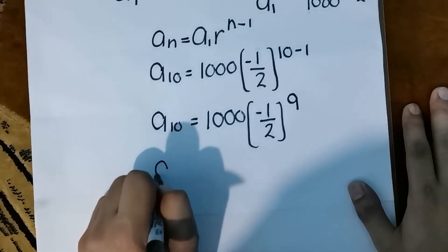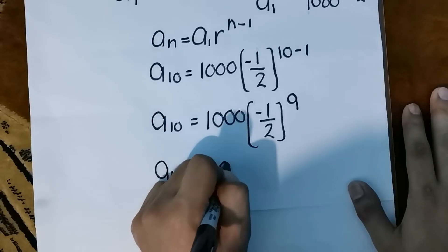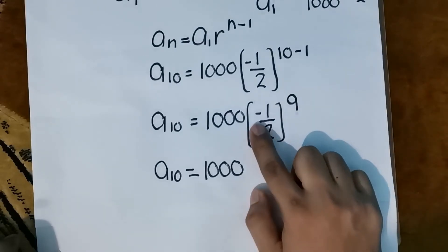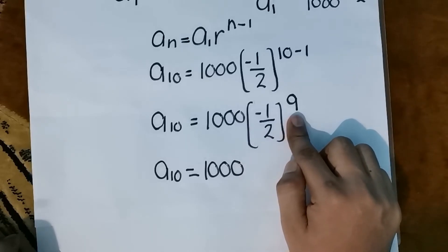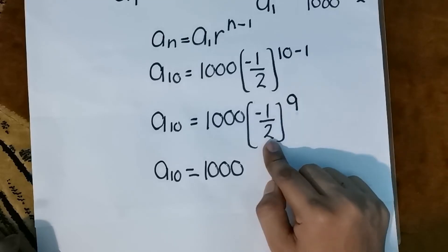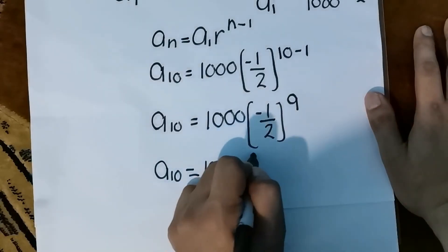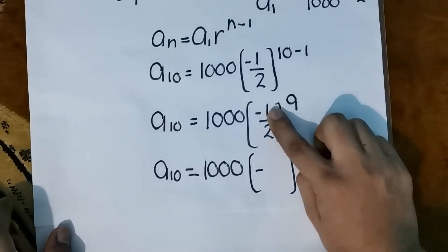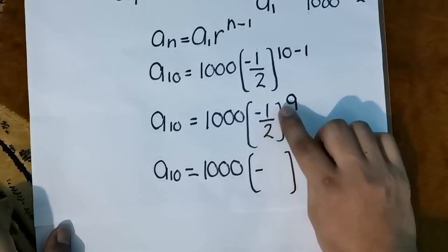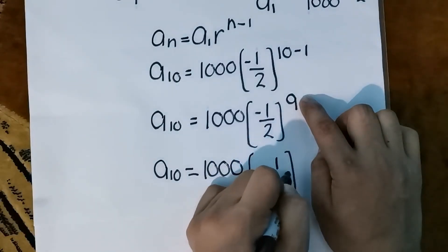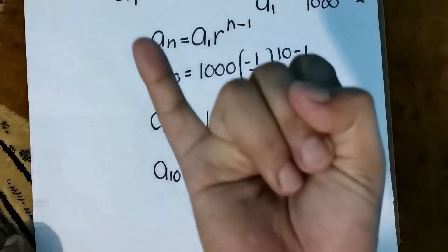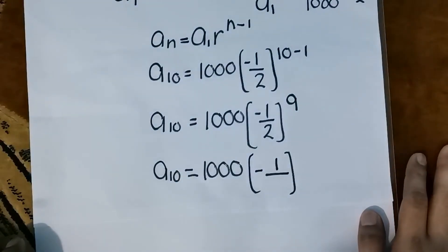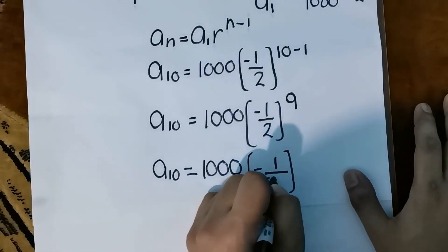So we have a sub 10 equals 1,000 times negative 1 half raised to 9. Remember: when the base is negative and raised to an odd exponent, the answer is negative. For negative 1 half raised to 9: the numerator is 1 raised to 9, which is 1, and the denominator is 2 raised to 9. Computing 2 to the 9th power — that is 2 multiplied by itself 9 times — gives us 512.